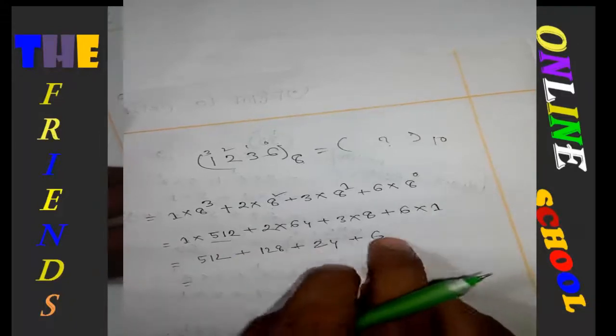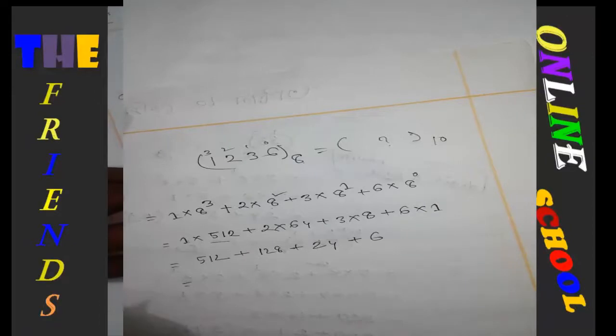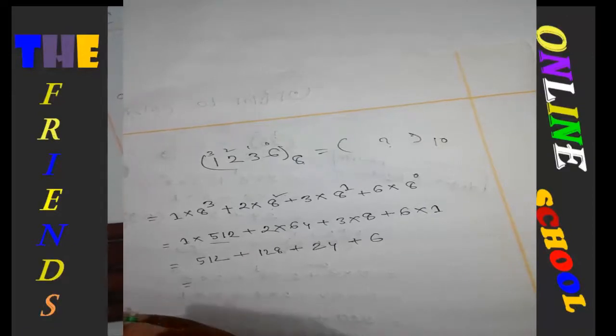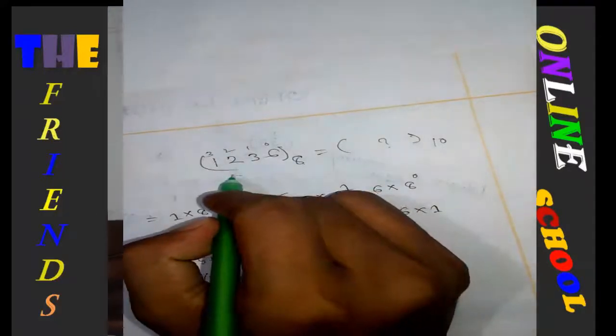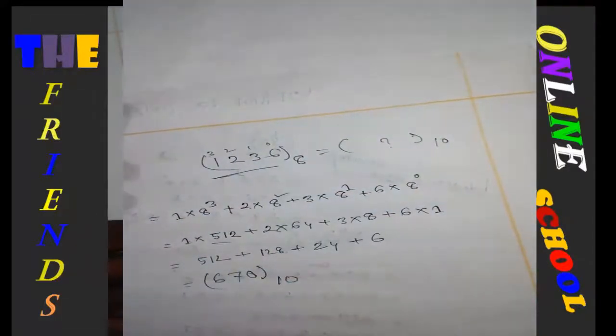1536 plus 128 equals 1664, plus 24 equals 1688, plus 6 equals 1694. So the answer in decimal is 1694. (3236)₈ equals (1694)₁₀.